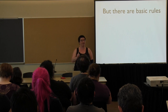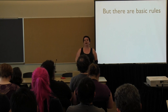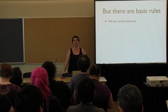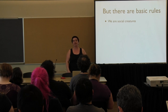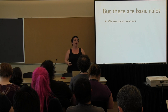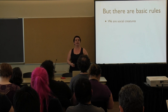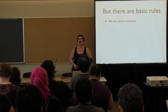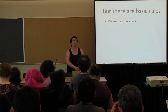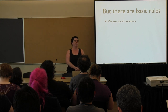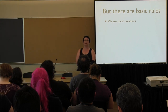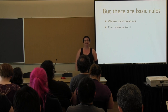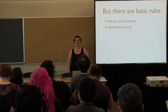So, the basic rules of the human social operating system. Step one: we are social creatures. Put a bunch of us together and we'll try to figure out how we all relate to each other, who belongs with whom, what we have in common. And not only are we social creatures, but social approval is very valuable — we like to feel part of things and we don't like when the group disapproves.